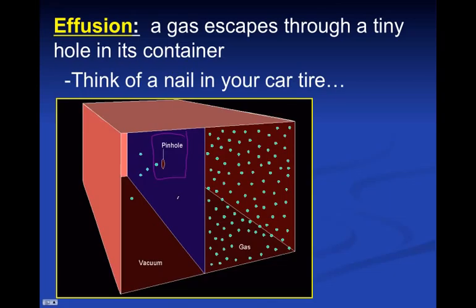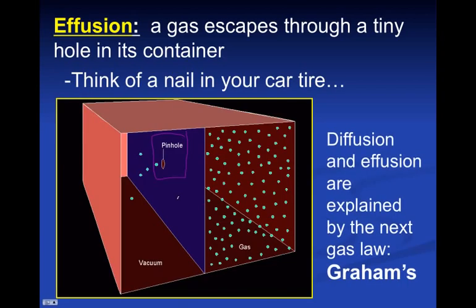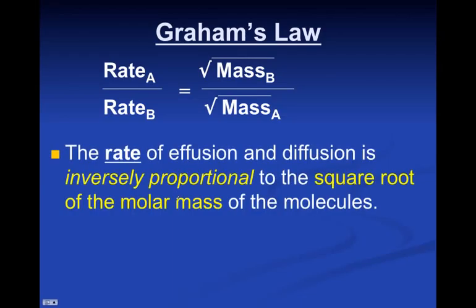And the example is, think of a nail in your car tire. So we use Graham's Law to calculate the rate of effusion or diffusion. And the rate of one gas over another is inversely proportional to the square root of their molar masses. Inversely proportional means that you have to flip them over.